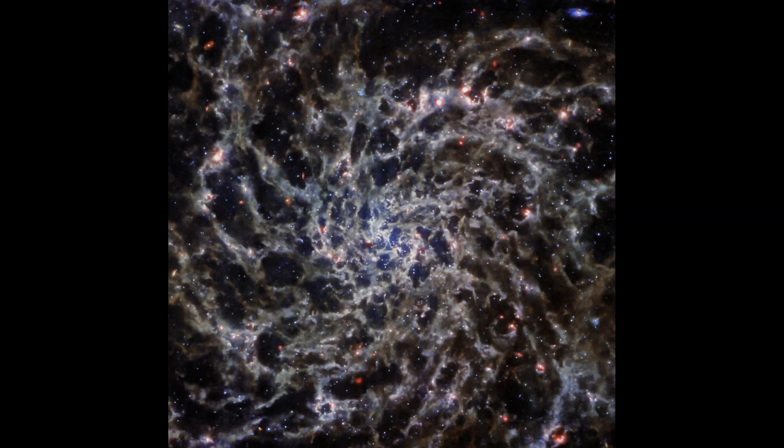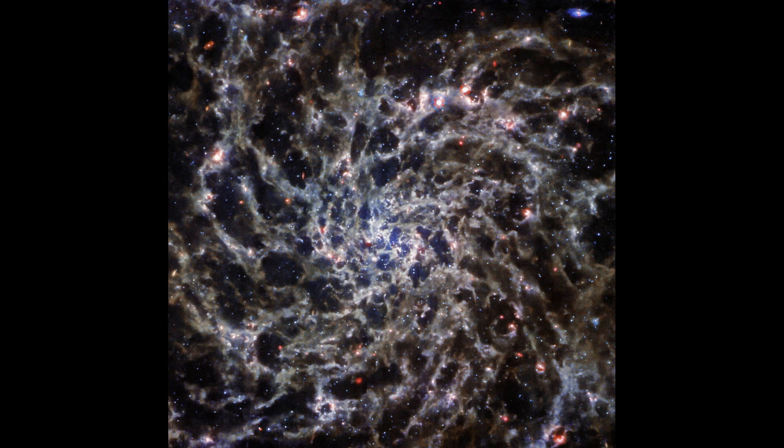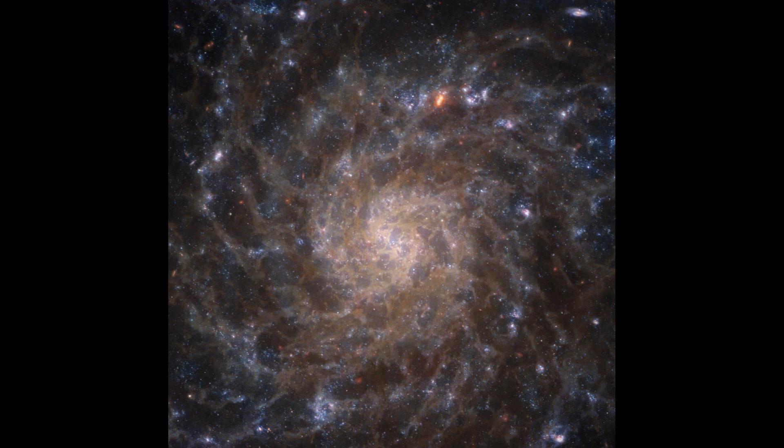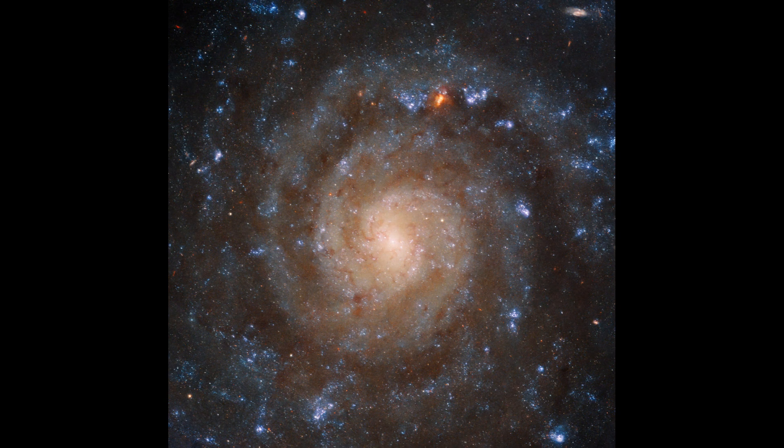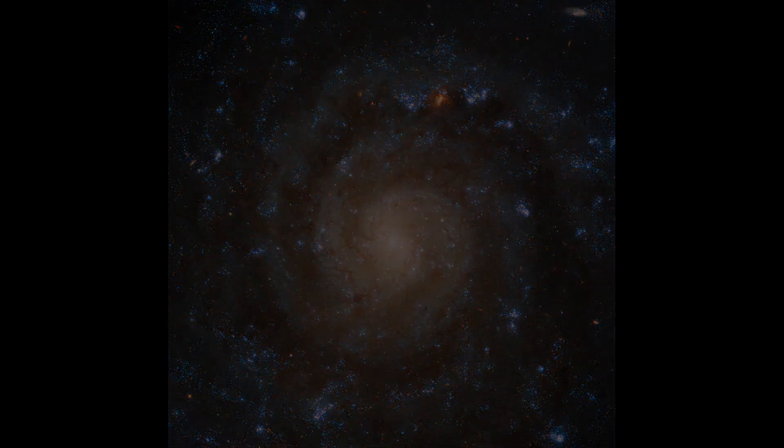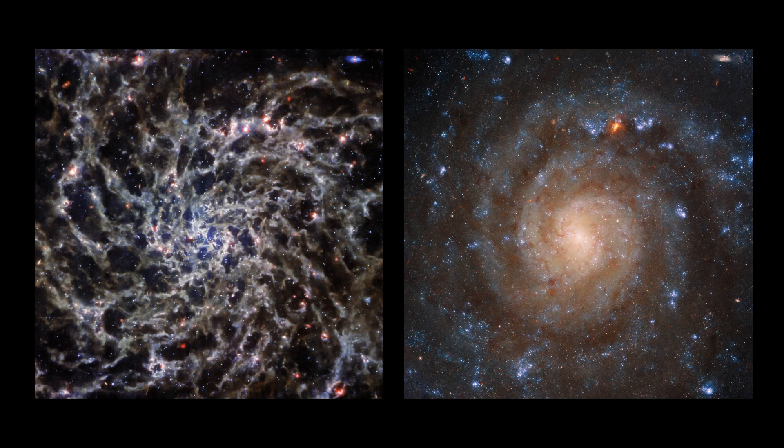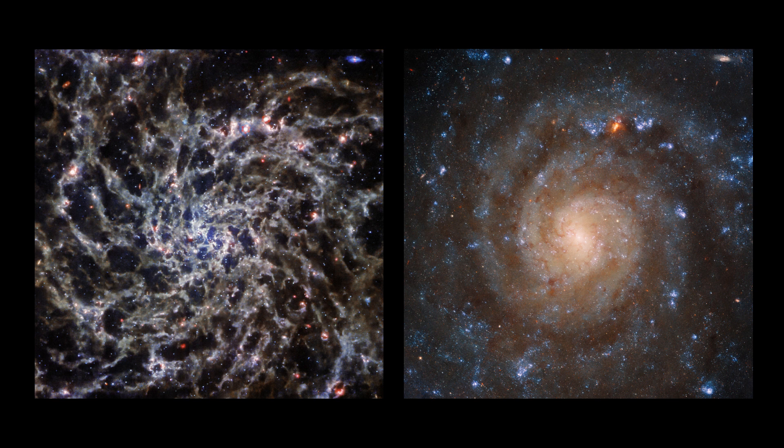Furthermore, different stars are visible in these images. Some shine more brightly in ultraviolet, visible, or infrared light, depending on their nature. These images complement each other, unveiling more about IC 5332's structure and composition.